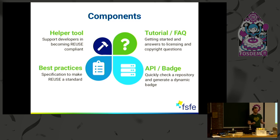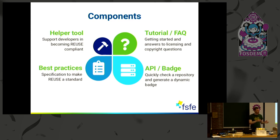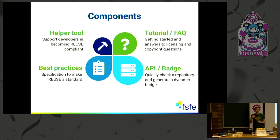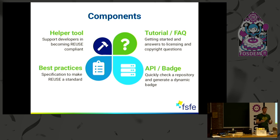Last but not least, we have something like ReUse as a service — we call this the ReUse API. You can quickly register your free software project — any Git repository, whether it's on GitHub, GitLab, or some other independent Git platform. You can see whether it's already ReUse compliant, and it will create a dynamic badge you can include in your README file so people can see your compliance status. If your project becomes ReUse compliant, you'll always see that; if not, it will show that too. Really transparent and easy to start with.